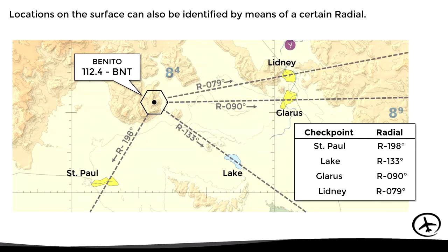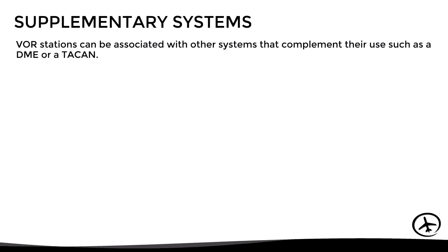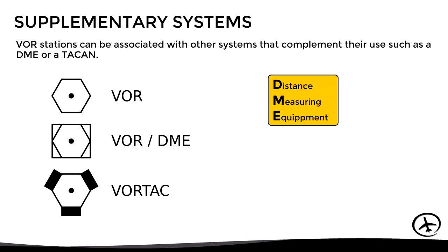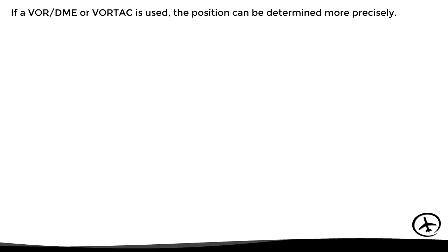So far it looks like the VOR is used exactly in the same way as an NDB. However, most VORs have supplementary systems that add additional capabilities, such as the Distance Measuring Equipment, or DME, or the Tactical Air Navigation System, or TACAN. If one of these systems is used, the position can be determined more precisely, since we will have distance information.